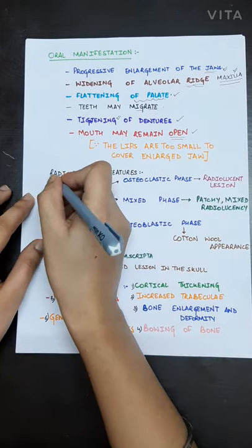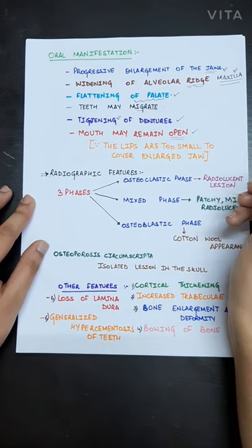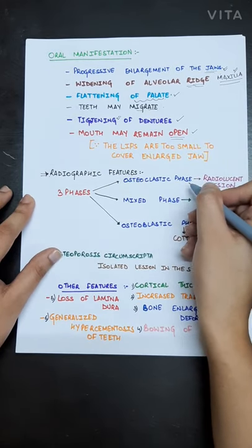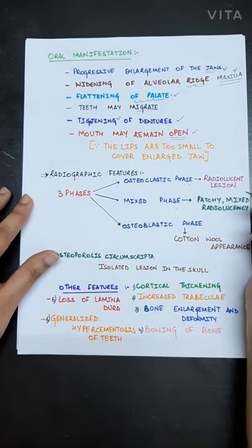Now, the radiographic features of Paget's disease. Paget's disease is having three phases: the osteoclastic phase, the mixed phase, and the osteoblastic phase.